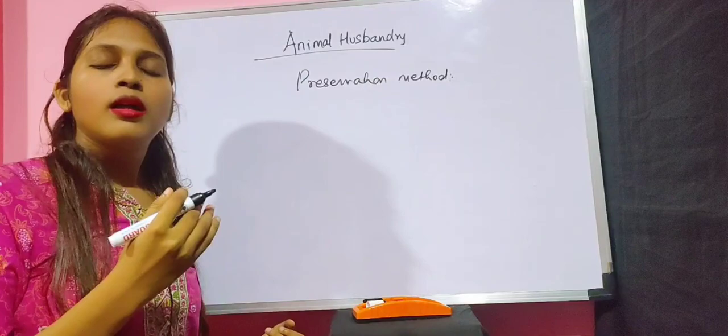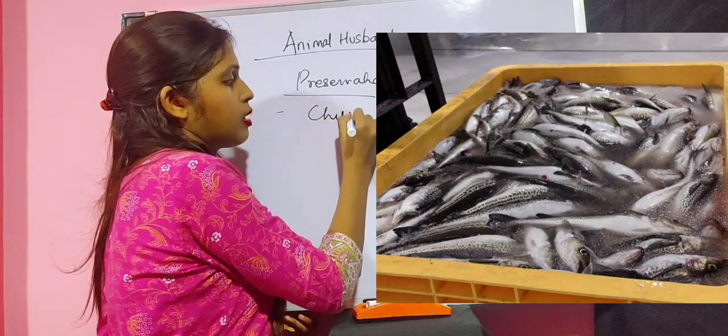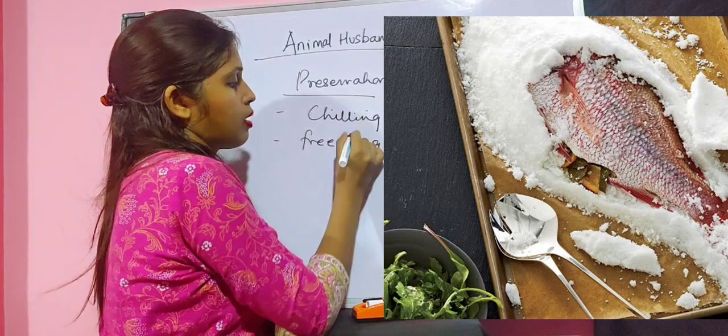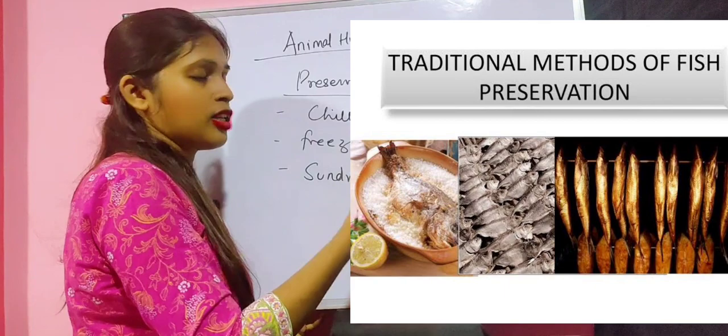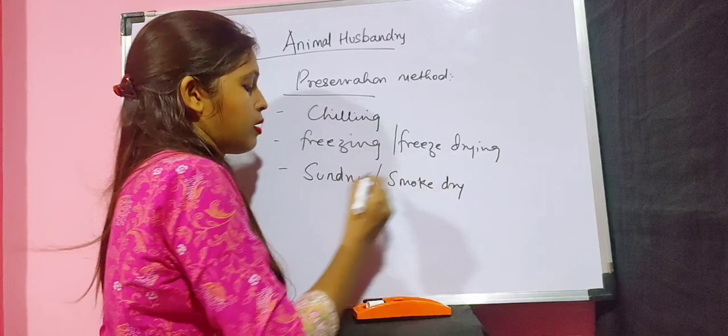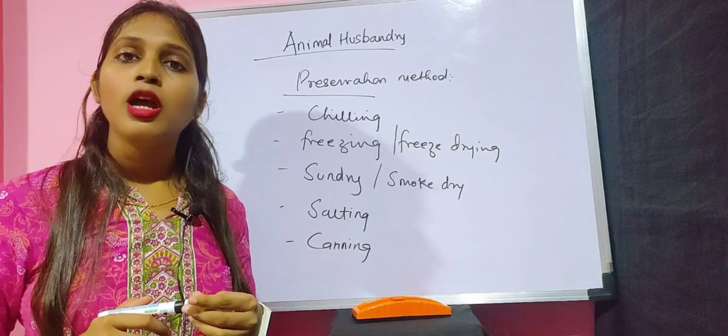There are certain preservation techniques to preserve fish and prevent it from getting spoiled: chilling, freezing, freeze drying, sun drying (exposing to sunlight), smoke drying, salting, and canning. These are the preservation methods to keep fish from spoiling.